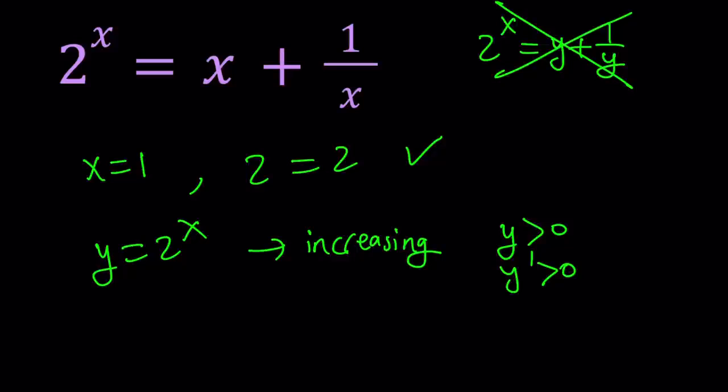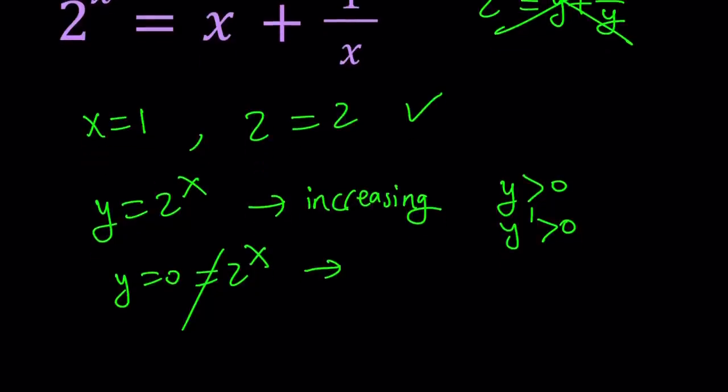And another thing that you can look at in terms of graphing a function is checking the x and y intercepts. Does this function have an x intercept? How can you find out? You can replace y with 0. And obviously, that's not going to give you any solutions because 2^x cannot equal 0. So we don't get any x intercepts. But can we get y intercepts? And the answer is yes. Because if you replace x with 0, then you're going to get y = 1. So (0, 1) is going to be a y intercept for this function.